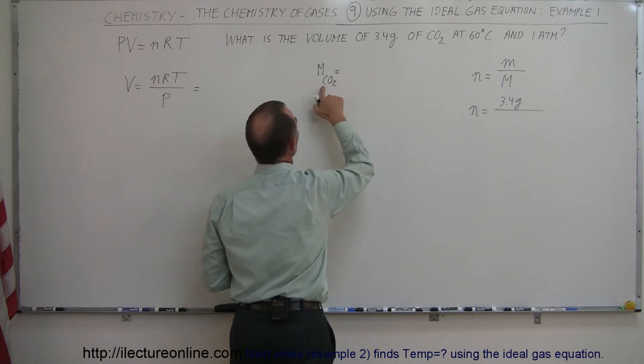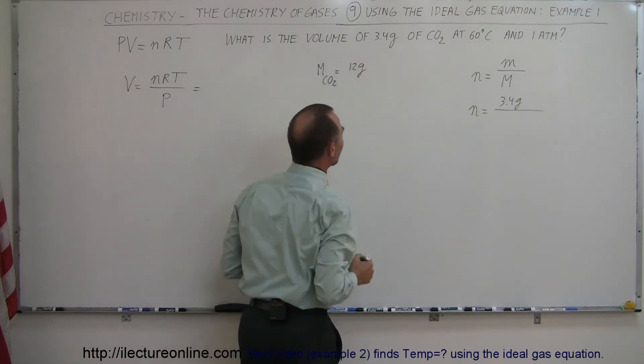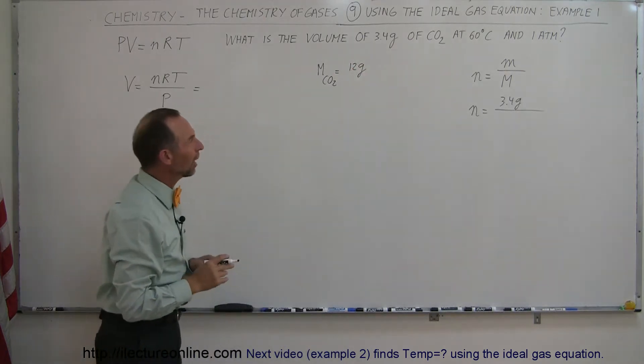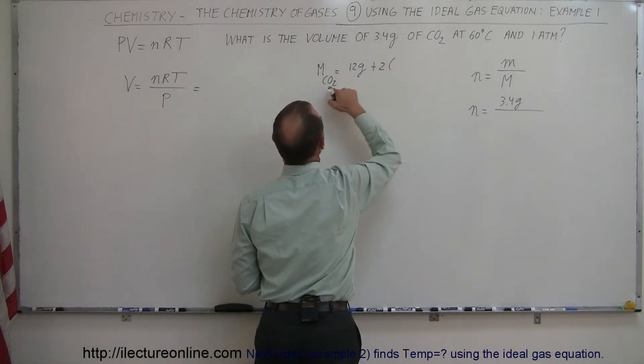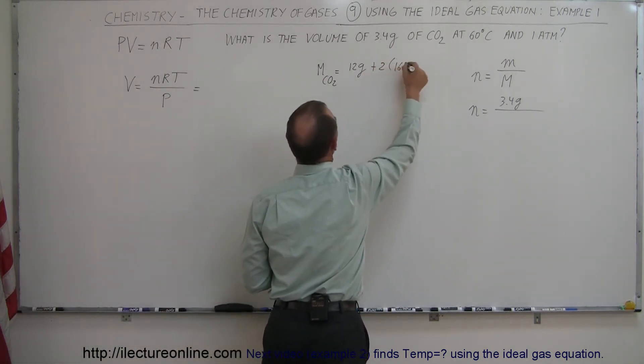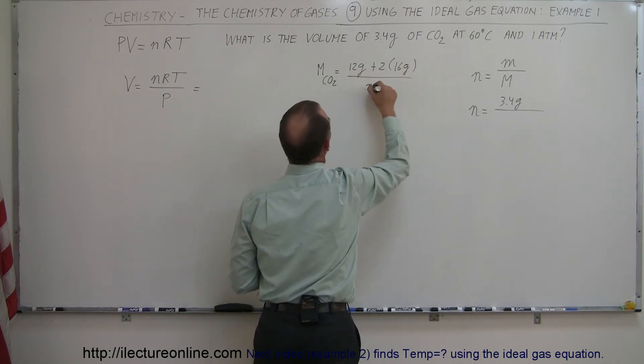We have one carbon, which means it is 12 grams, round it off, 12 grams per mole, plus two times the molar mass of oxygen, which is 16 grams, and so that would be per mole.